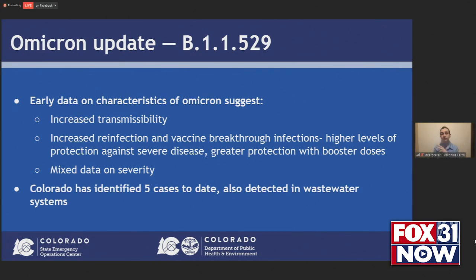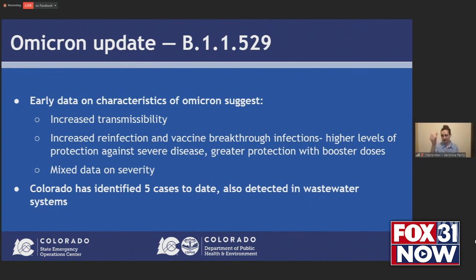Just a quick update on Omicron. There has been some new data that has come out — much of it is still early, preliminary data — but we are learning a little bit more about the Omicron variant this week. Characteristics include increased transmissibility. It does look like the Omicron variant is spreading more easily from person to person, resulting in really steep case increases being observed in South Africa and now also some European countries. The U.K. and Denmark are also seeing steep increases right now. We also have some early data that suggests reinfection may be more likely to occur with Omicron than earlier variants or the ancestral strain of SARS-CoV-2.